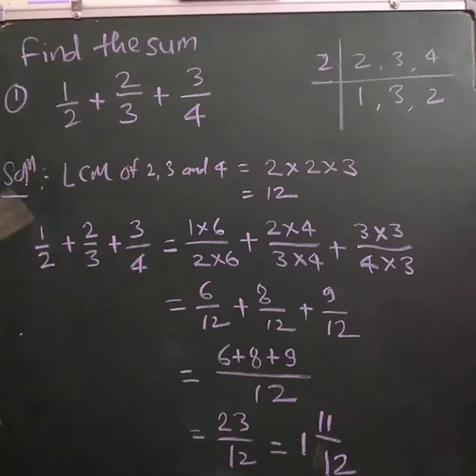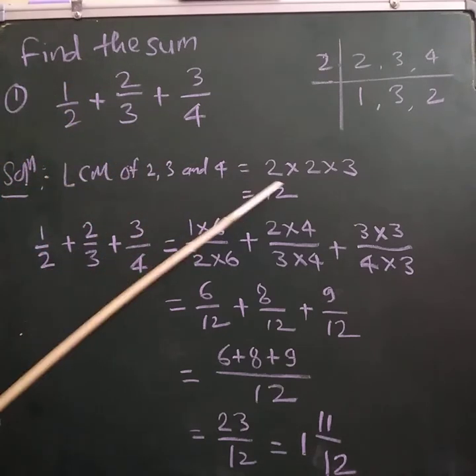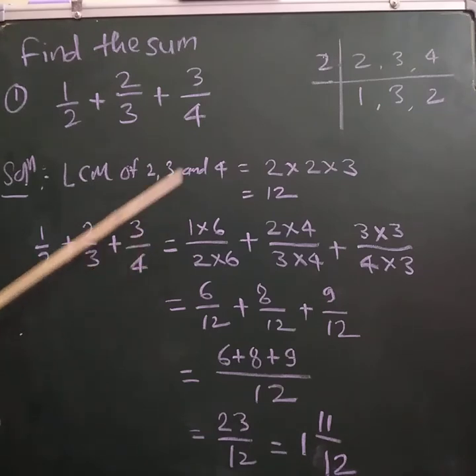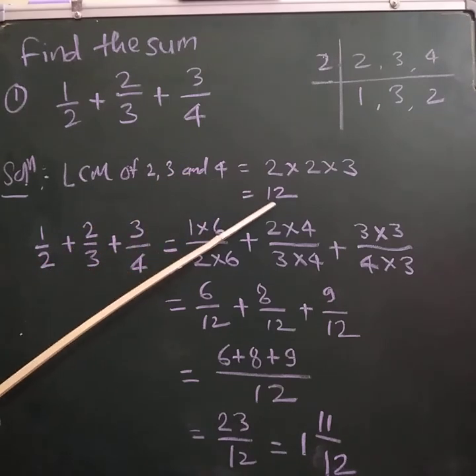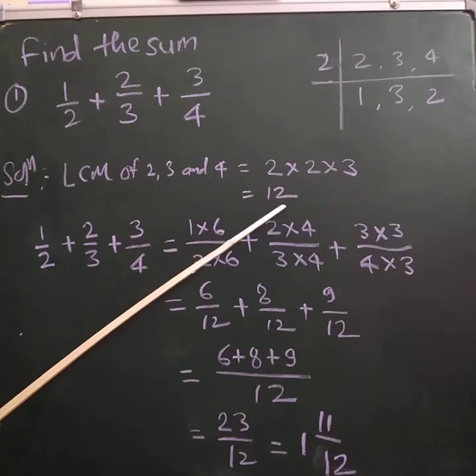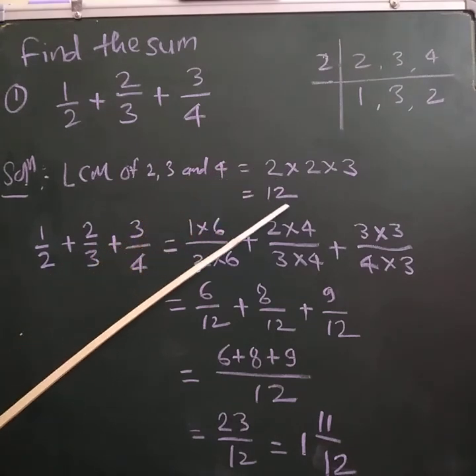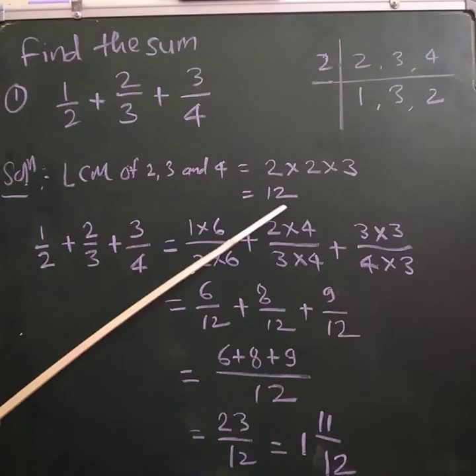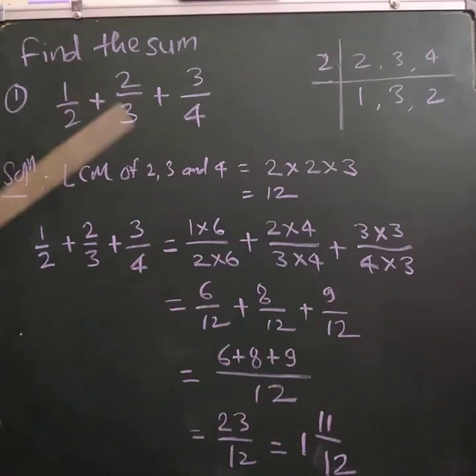In this way, you can find the sum of unlike fractions by finding the LCM. And then you have to make equivalent fractions having the denominator of each fraction equal to the LCM of the denominators, and you can solve the given fractions and find the sum.